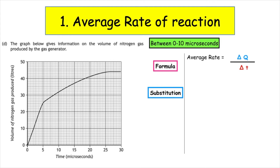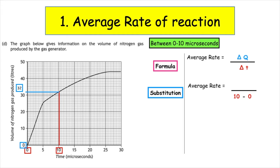We're then going to substitute. In the question, we're given 0 and 10 microseconds. We always take small numbers away from big numbers, so we write 10 minus 0. We look at the graph to see where time is along the x-axis and put a box around 0 and a box around 10. We draw a line from the x-axis at 0 and 10 until we meet the point plotted on the curve. At time 0, we have 0 volume of gas produced, and at time 10, when we extrapolate along to the y-axis, we get 32 litres.